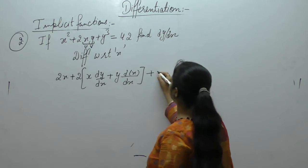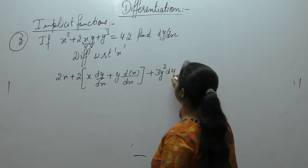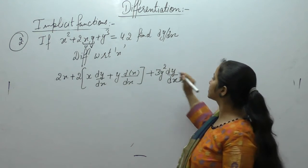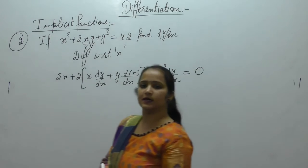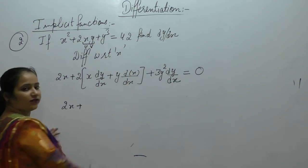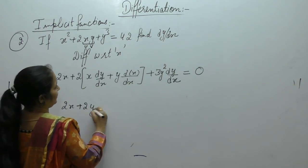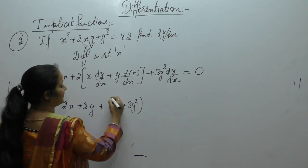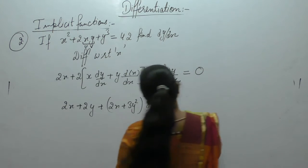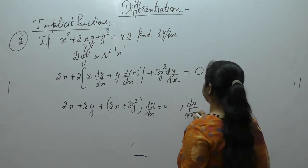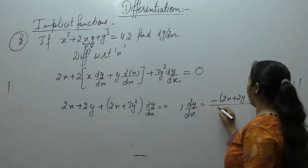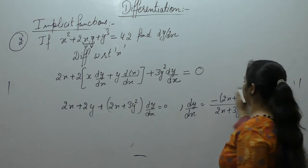Plus y³: derivative of y³ is 3y²·dy/dx, since this is a function of y. Derivative of constant 42 is 0. So we get: 2x + (2y + 2x·dy/dx) + 3y²·dy/dx = 0. Collecting dy/dx terms: dy/dx = −(2x + 2y) / (2x + 3y²).